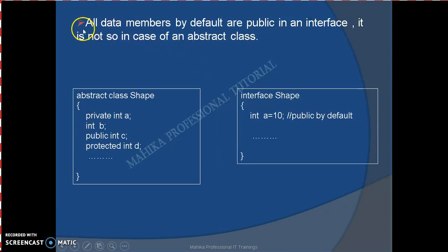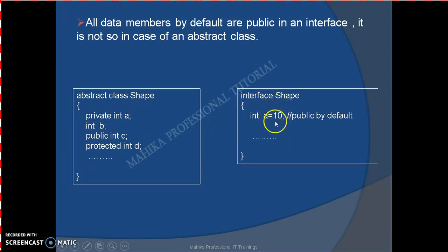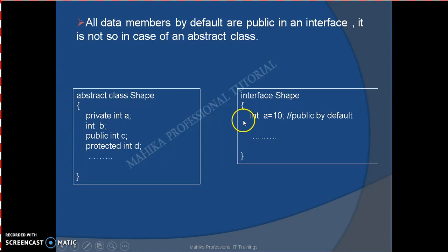The next difference is that all data members by default are public in an interface, whereas it is not so in case of abstract class. In an abstract class we can give access modifiers for data members as private, public, protected, or package-private when we do not give any explicit access modifier. But in case of an interface, even if we do not give any modifier explicitly, all data members by default are public, static, and final. So we cannot have private or protected data members in an interface.